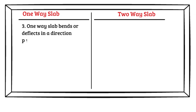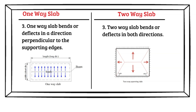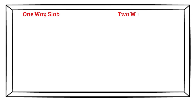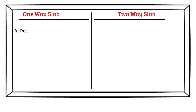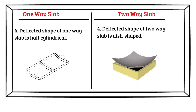Difference number three: a one-way slab bends or deflects in a direction perpendicular to the supporting edges. In the figure, the bending direction is perpendicular to the long edges. A two-way slab bends or deflects in both directions, as shown in the figure. Difference number four: the deflected shape of a one-way slab is half-cylindrical, as seen in the figure. The deflected shape of a two-way slab is dish-shaped, as shown in the figure.